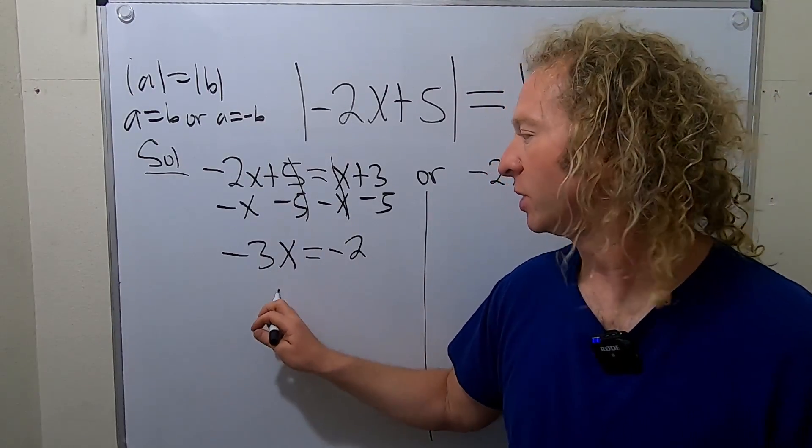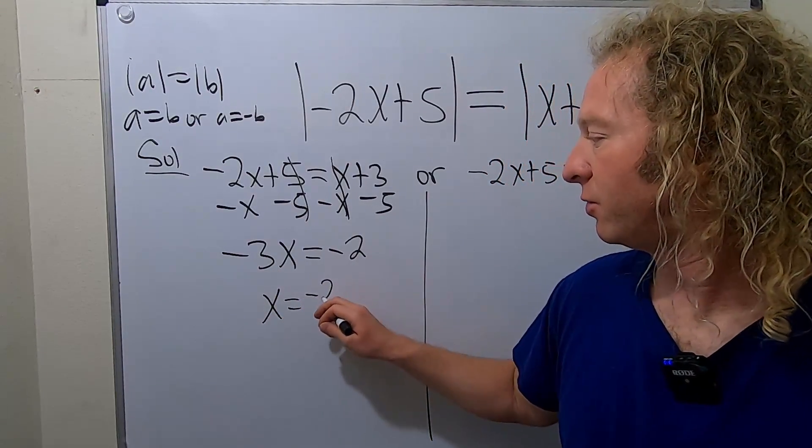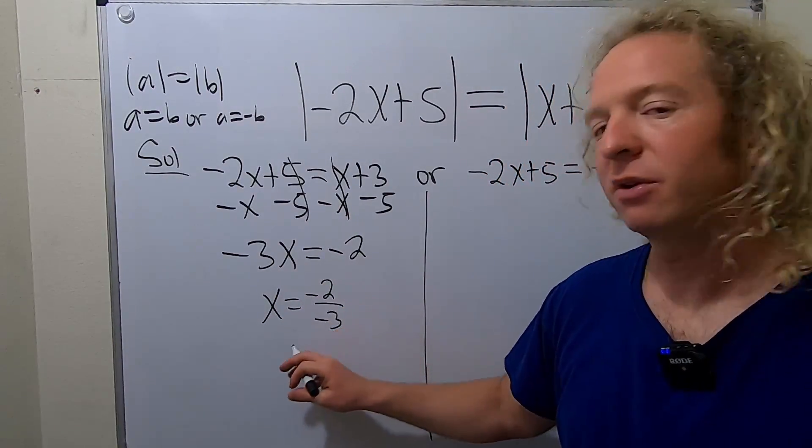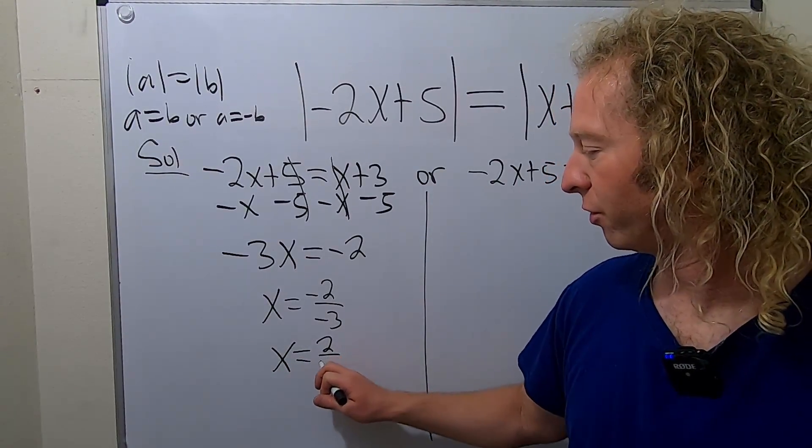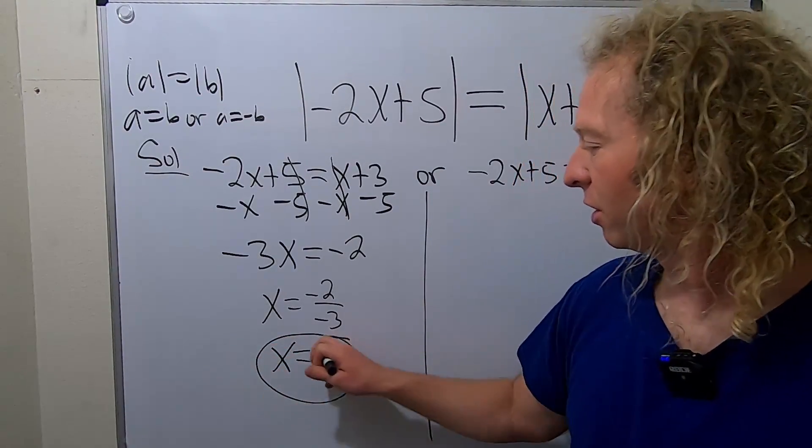And then divide by negative 3. So we get x equals negative 2 over negative 3. So x is equal to 2 over 3. And that is the answer there.